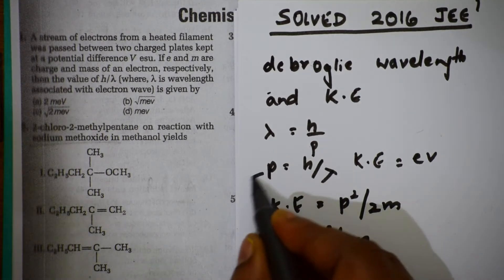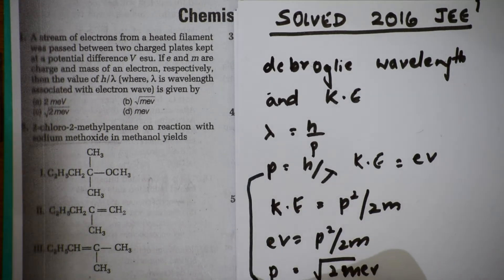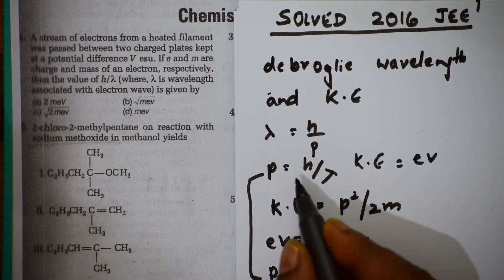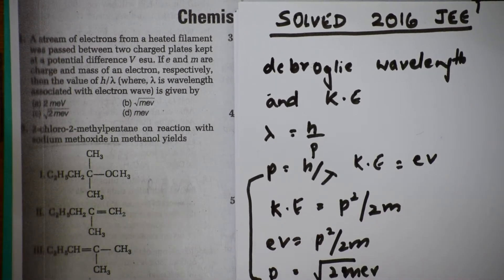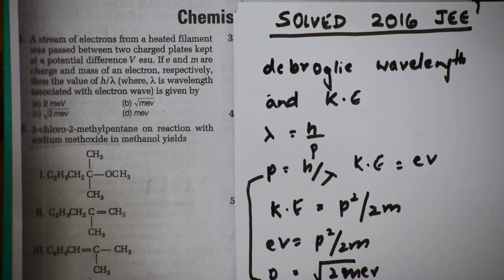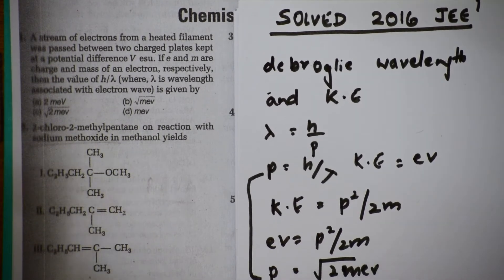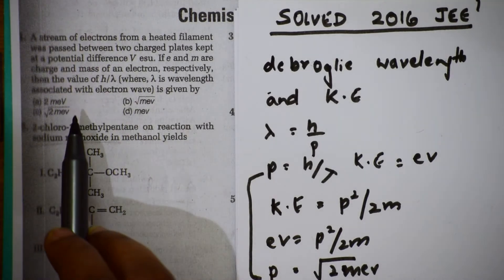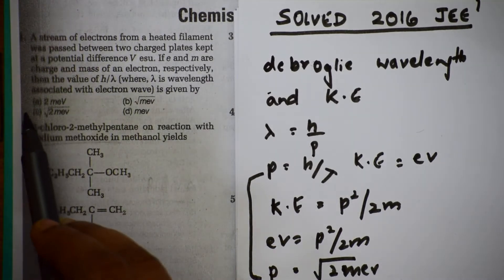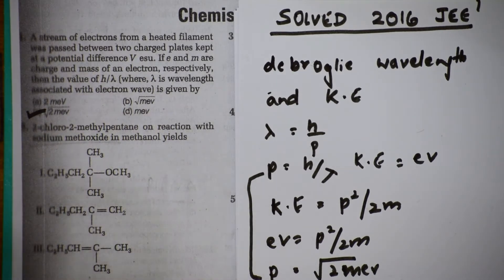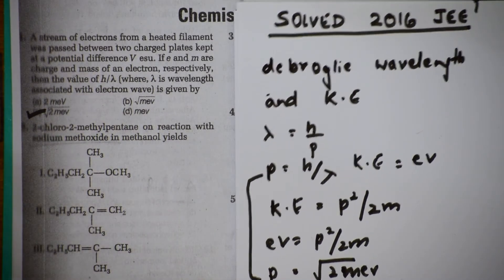So H/λ = √(2mEV). The correct option is C — √(2mEV). Now let's move to the next question, which is an organic part.